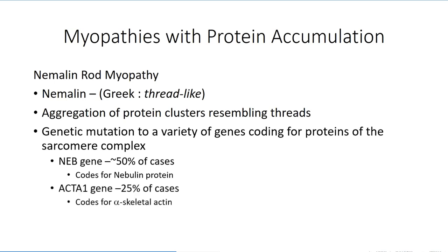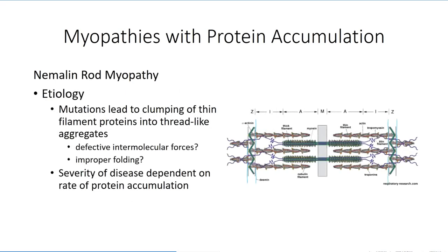Another common mutation that can lead to nemaline rod myopathy is a mutation to the ACTA1 gene, which codes for alpha-actin found in skeletal muscle. Certain mutations have a tendency to create sticky points on the protein, possibly through the replacement of a non-polar amino acid subunit with a polar subunit. Whatever the case, the protein subunits will tend to aggregate together, forming an insoluble mass of protein filament. The degree to which this occurs depends on the specific mutation and will impact the severity of the condition.